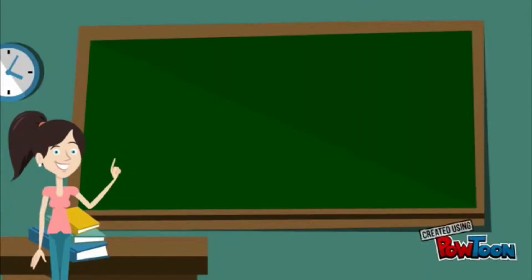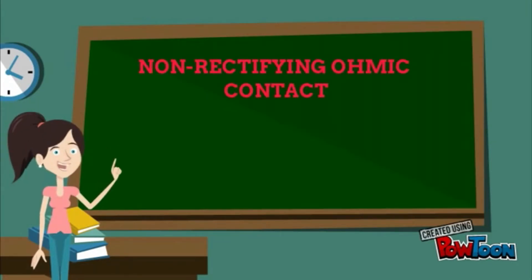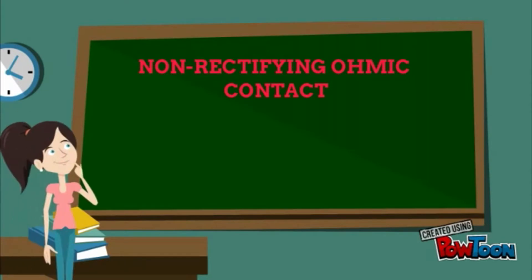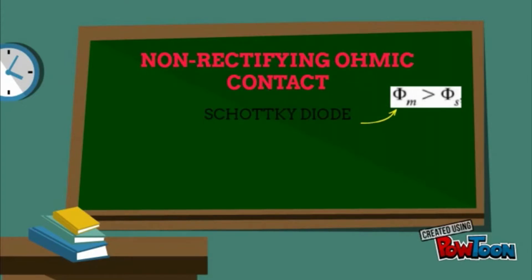Hi, today we are going to discuss the topic of non-reactive ohmic contact. As we have learned from the previous chapter, a Schottky diode is formed when the metal work function is greater than that of the N-semiconductor, or when the metal work function is smaller than that of the P-semiconductor.